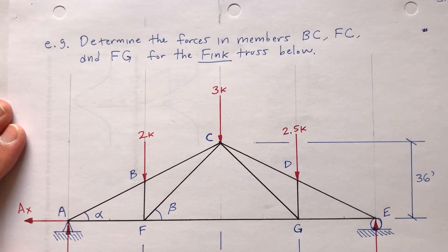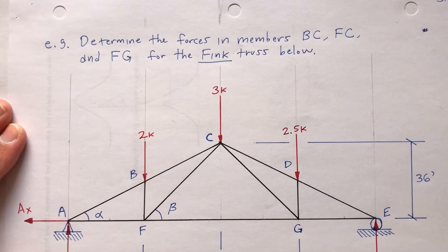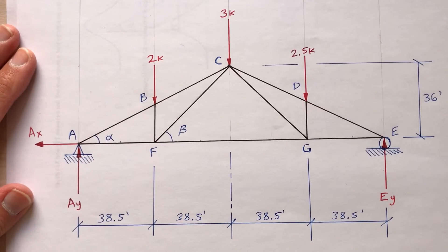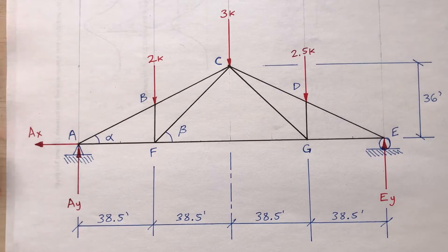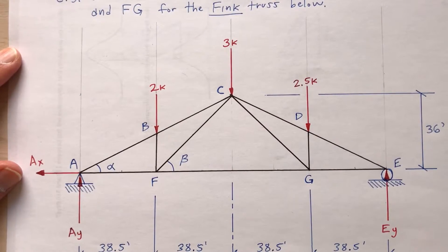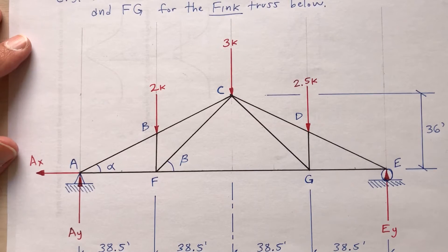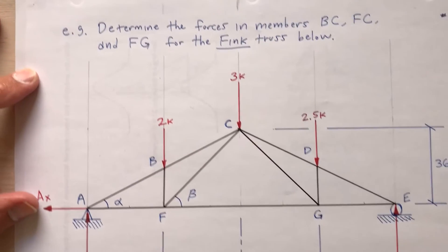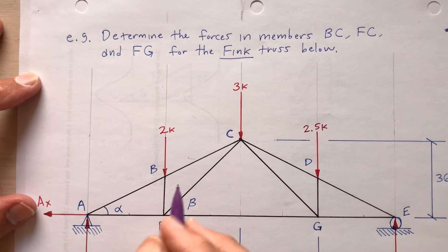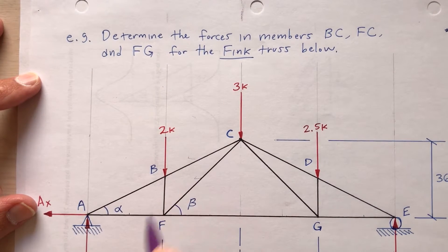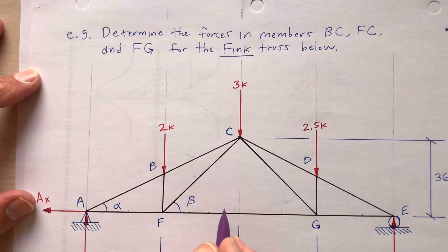Determine the forces in members BC, FC, and FG in the Fink truss below. Here's the Fink truss — 36 feet tall with 38.5-foot sections at the bottom. There are three loads: two kips at B, three kips at C, and two and a half kips at D. BC is this member, FC is this member, and FG is this bottom member.